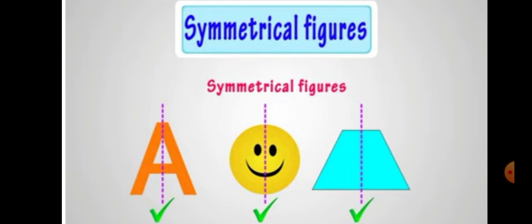Next one is a quadrilateral, or you can say it is a trapezium. Along with this dotted line, when we fold it, one half completely covers the other half. So it means it is also symmetrical in shape.